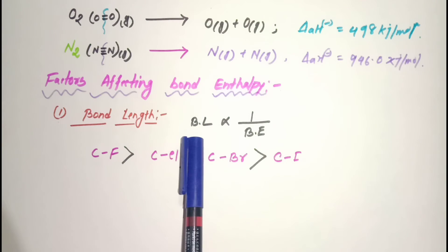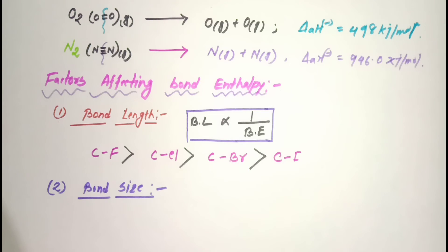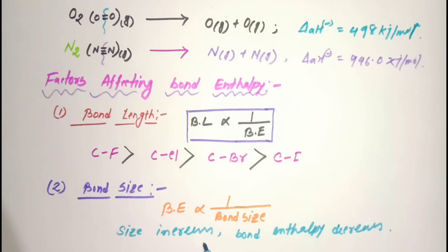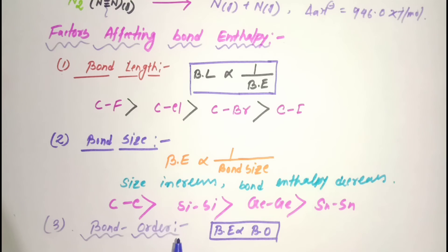That is why bond length is inversely proportional to bond enthalpy. The second point is atomic size. As size of atoms increases, bond enthalpy decreases. This is very simple logic. For example, if we look at carbon, silicon, germanium and tin forming single bonds - the same group of elements. Bond enthalpy decreases down the group.